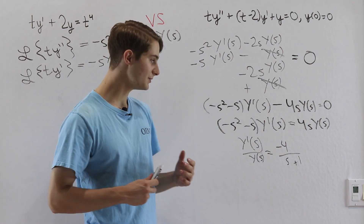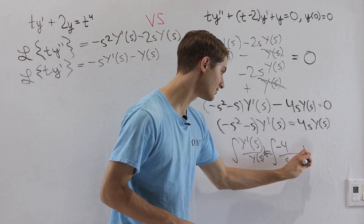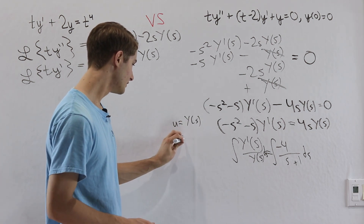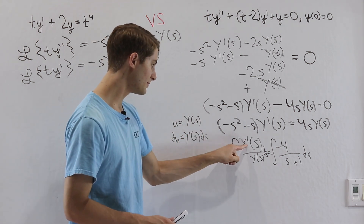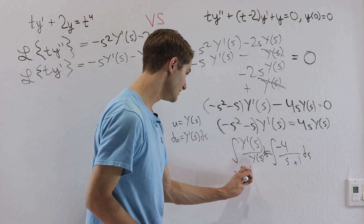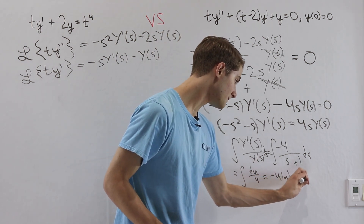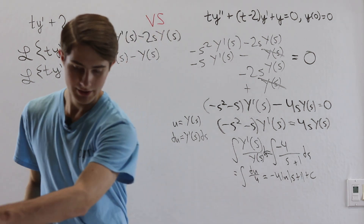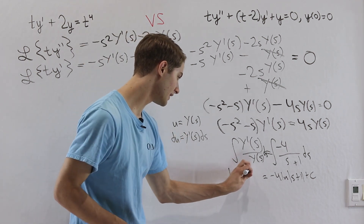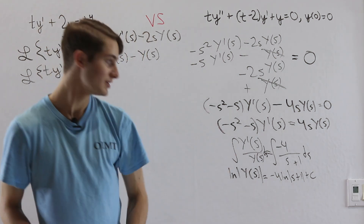To solve for Y of s, we integrate both sides with respect to s. On the left side, using the substitution u equals Y of s so du equals Y prime of s ds, we get the integral of du over u, which is the natural log of the absolute value of Y of s. On the right side, we get negative 4 times the natural log of s plus 1 plus C.